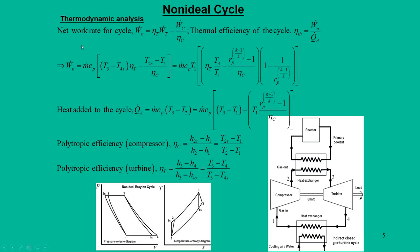By introducing turbine efficiency η_t and compressor efficiency η_c, we write the net work output: turbine work is reduced by η_t, and compressor work is increased, giving W_c / η_c. Net work output decreases accordingly. Based on calculation of W_net and heat addition Q_in, we can calculate the thermal efficiency of the cycle. Compressor and turbine efficiencies are introduced in terms of temperature differences since enthalpy is represented as C_p × T for ideal gas.